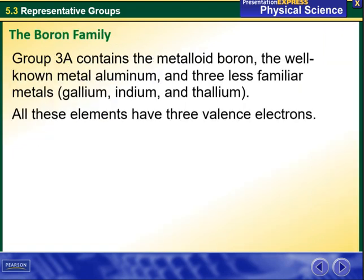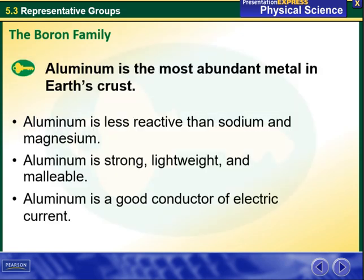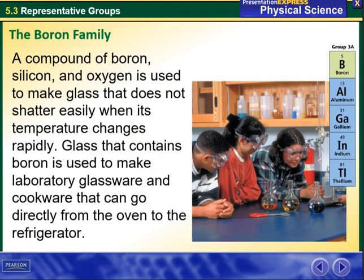The boron family, group 3A, contains the metalloid boron, the well-known metal aluminum, and three less familiar metals: gallium, indium, and thallium. All these elements have three valence electrons. Aluminum is less reactive than sodium and magnesium — it is strong, lightweight, malleable, and a good conductor of electric current. A compound of boron, silicon, and oxygen is used to make glass that does not shatter easily when its temperature changes rapidly.